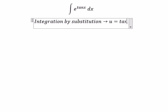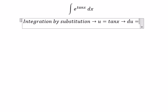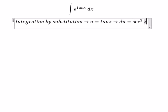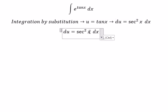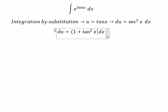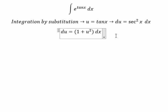We let u equal to tan(s), so du equals secant squared of s, ds. We can change 1 plus tan²(s) using this identity, and this becomes u squared. Then we divide both sides by 1 plus u squared.